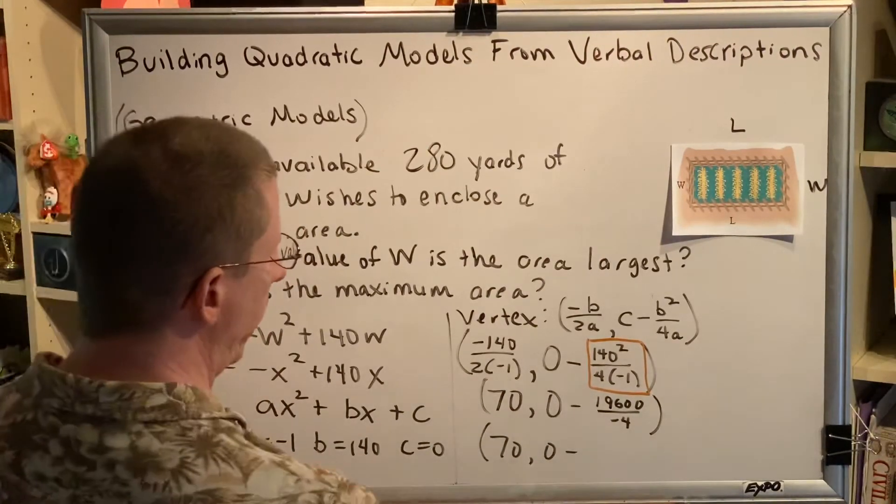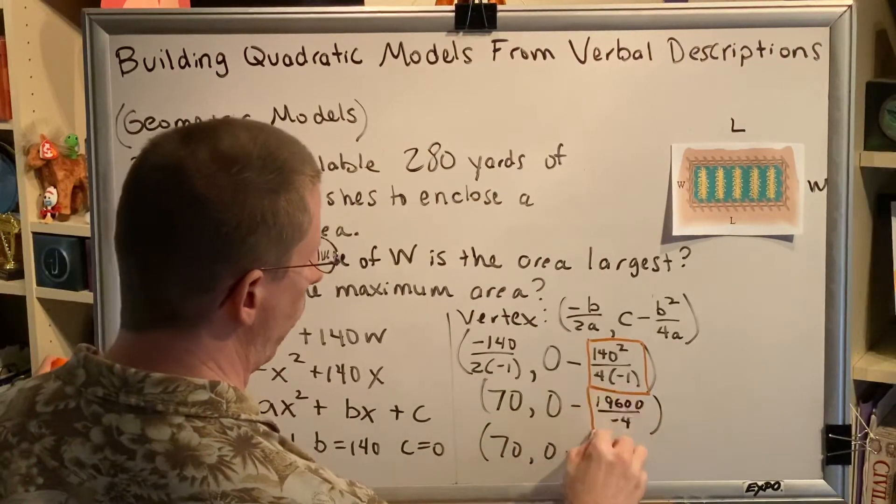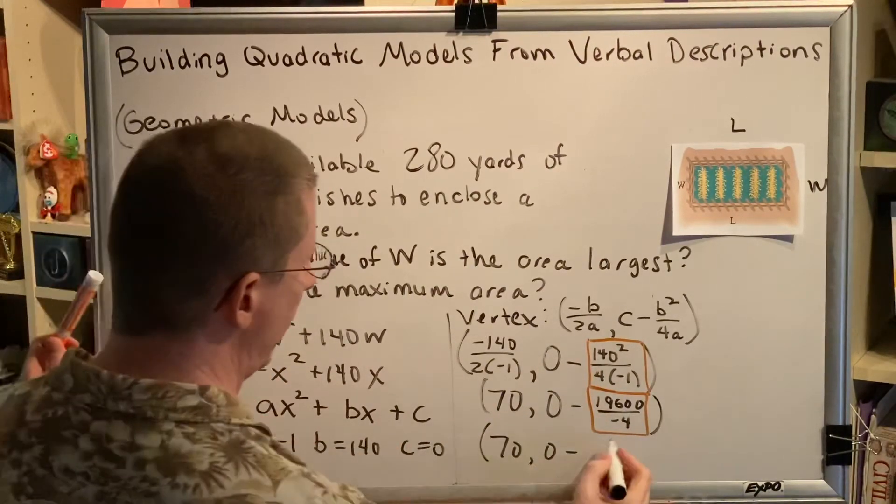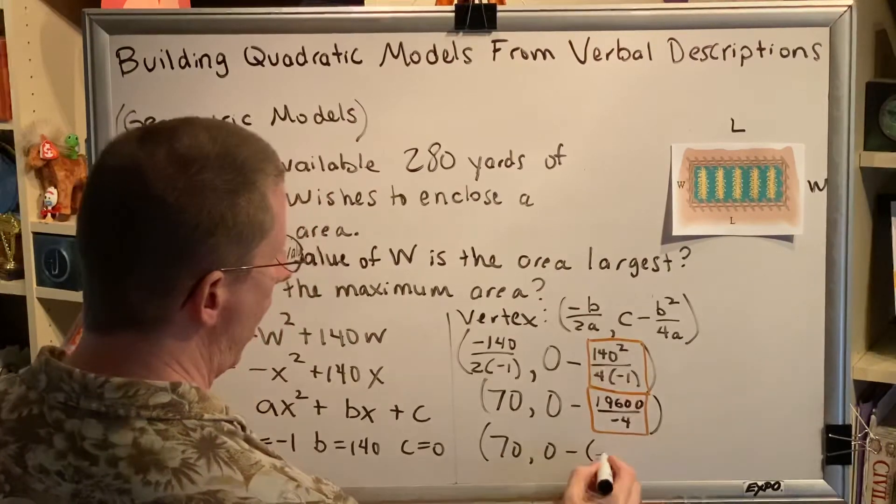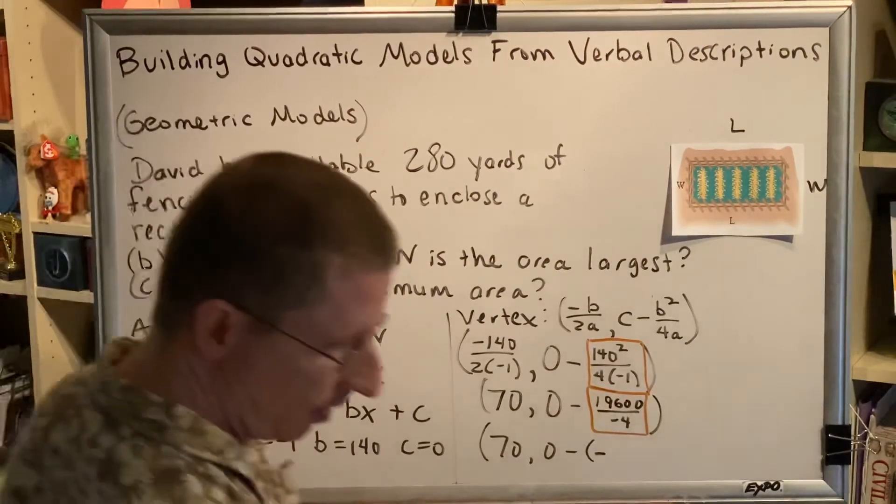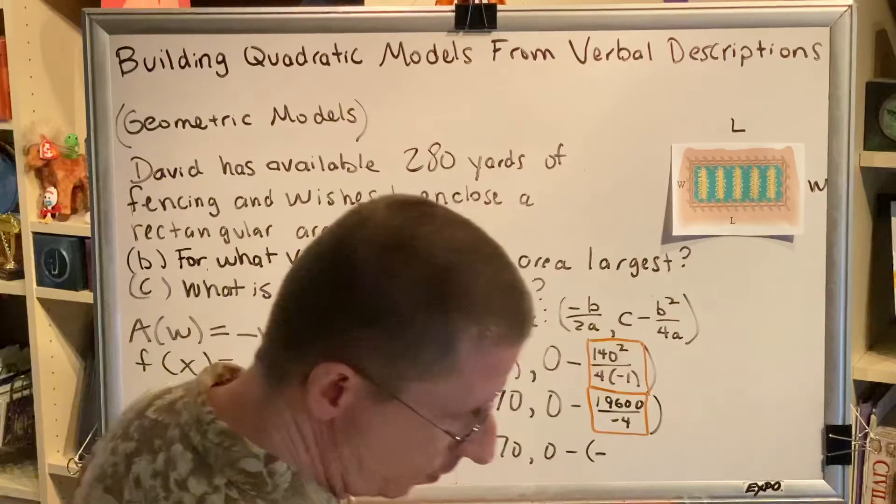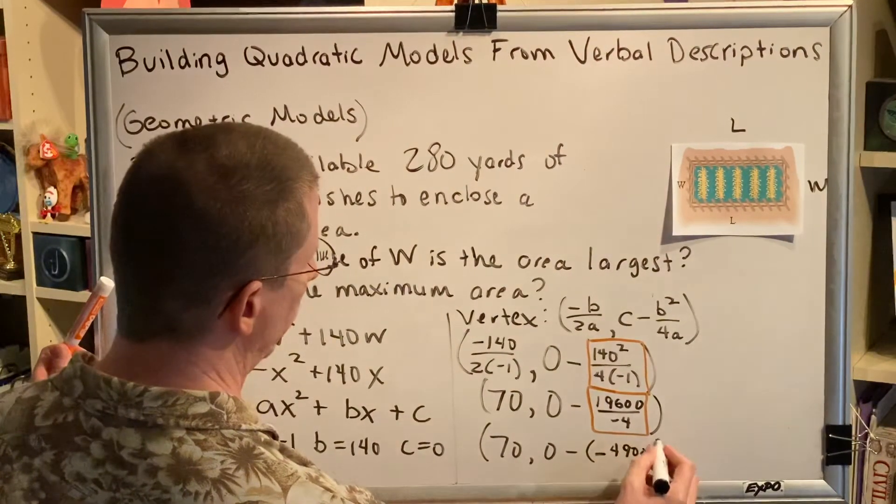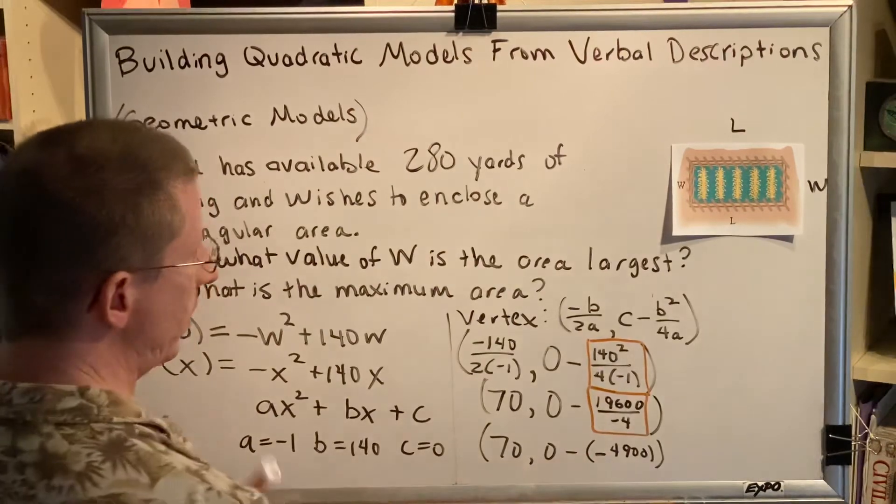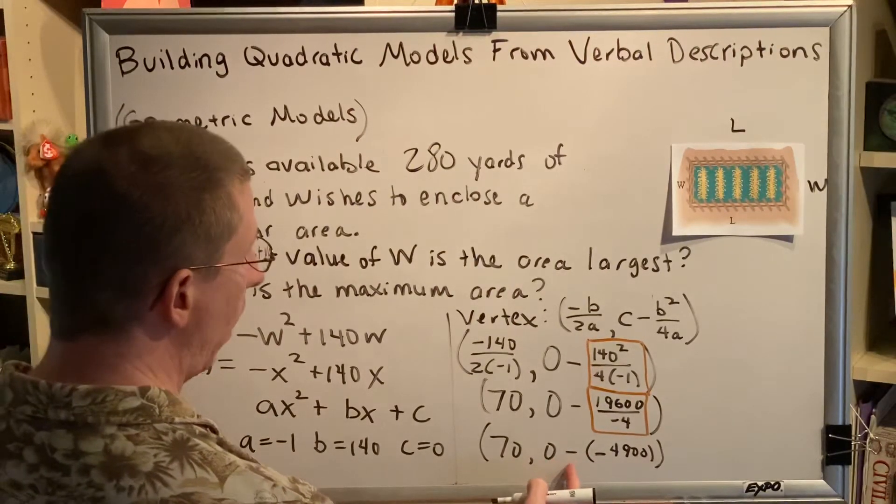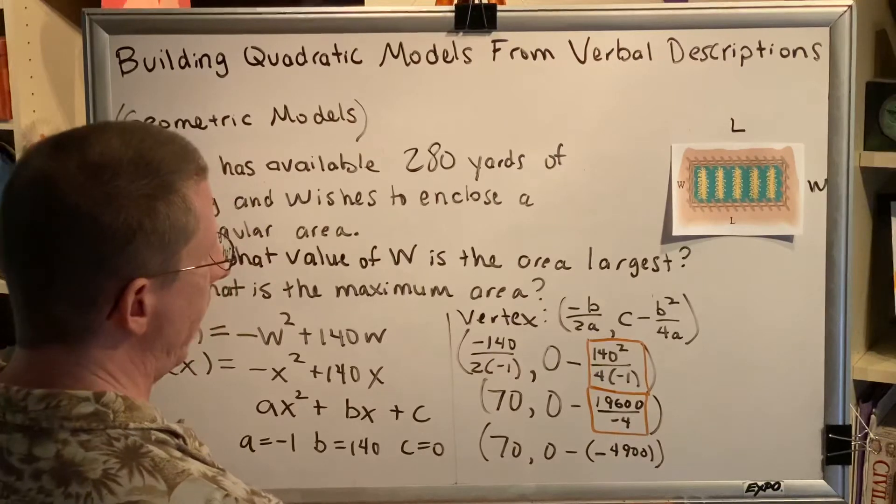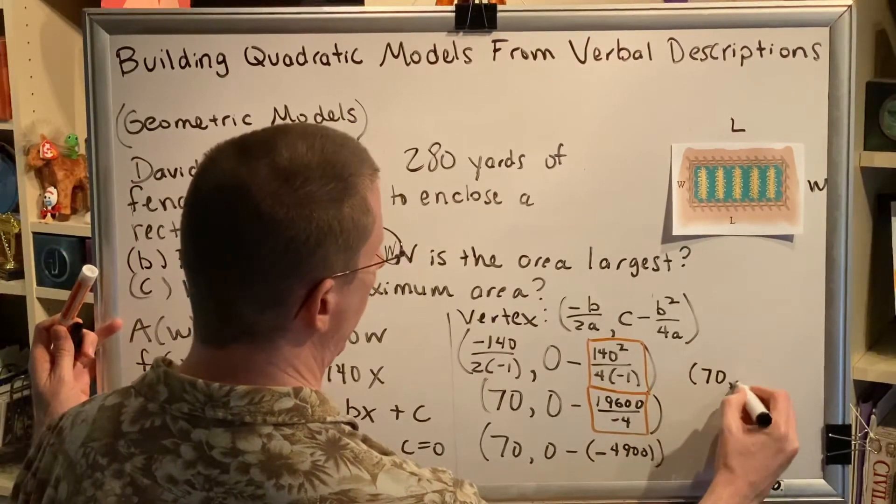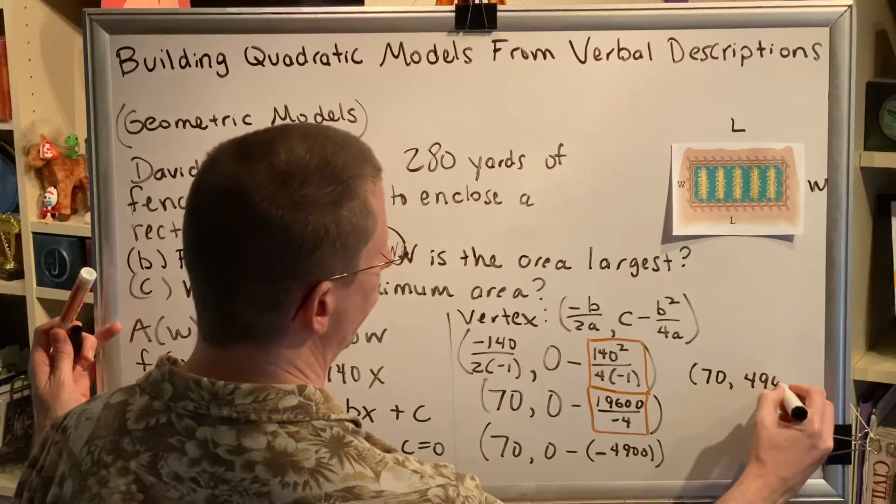Again, I'm ignoring this subtraction and just focusing on the fraction. A positive divided by a negative is a negative, and 19,600 divided by 4 is 4,900. Subtracting a negative is adding. So, this becomes 0 plus 4,900, and that's just 4,900. So we get 70 comma 4,900 for our vertex.